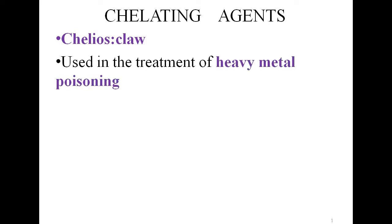Good morning and welcome to today's class on chelating agents. The word 'chelating' is derived from 'chelias,' meaning claw-like — like the claws of an eagle gripping tightly. Chelating agents are used in the treatment of heavy metal poisoning, including heavy metals like copper, iron, manganese, cadmium, lead, and others.